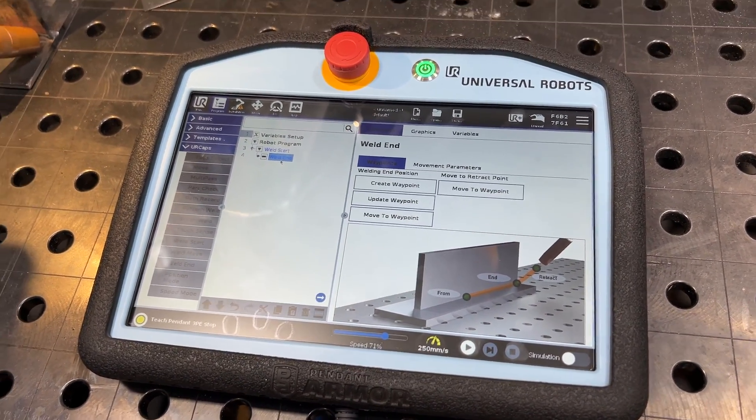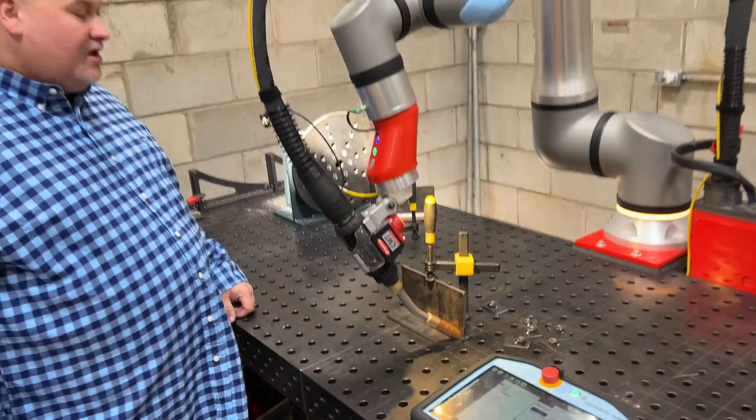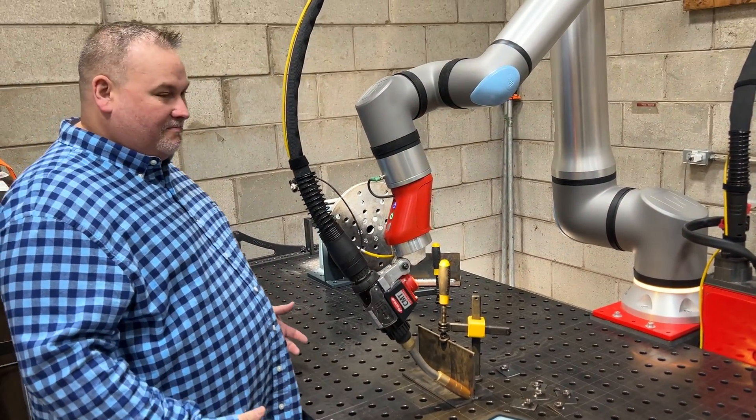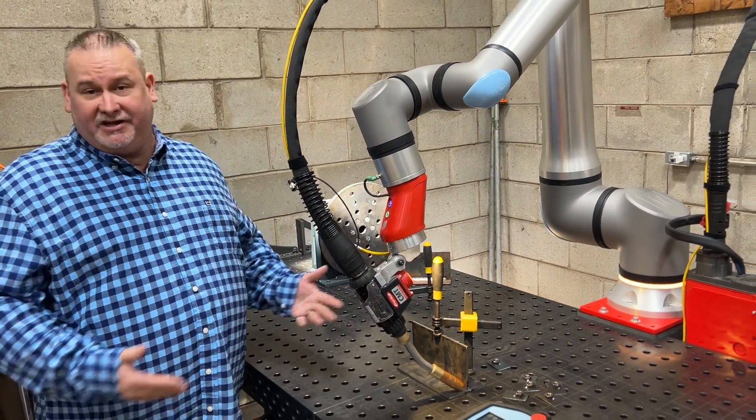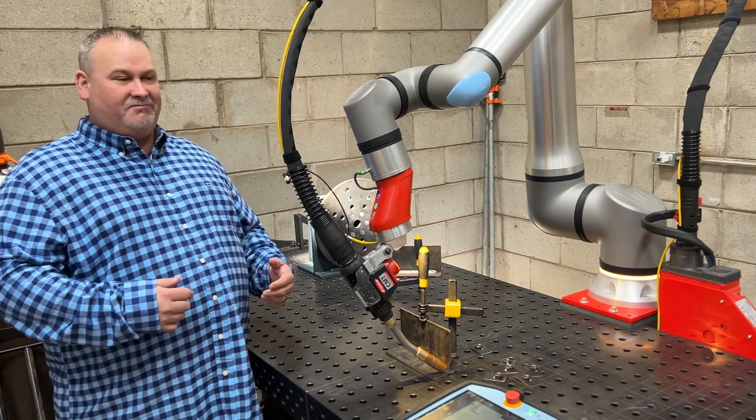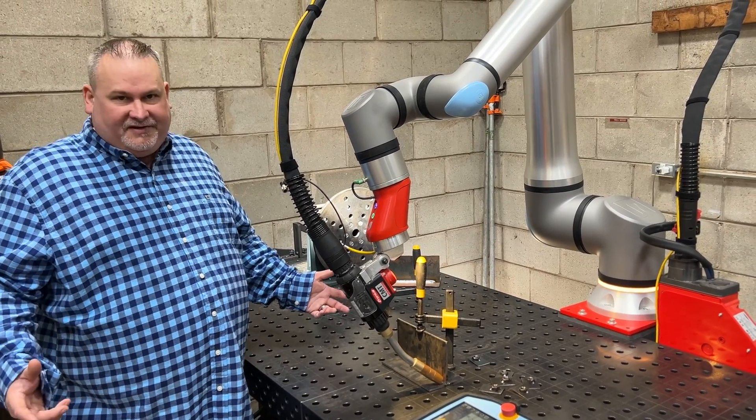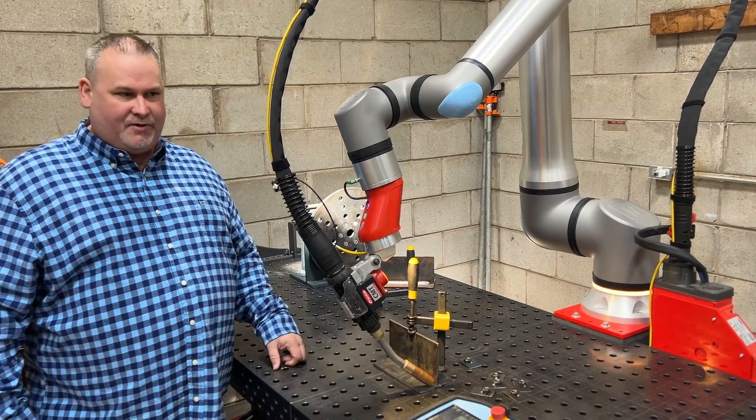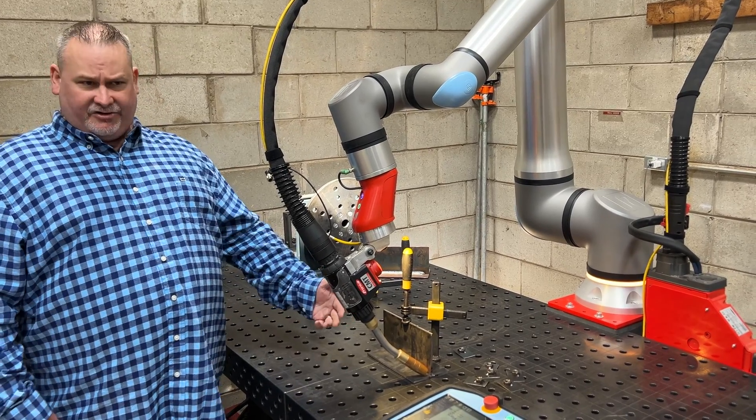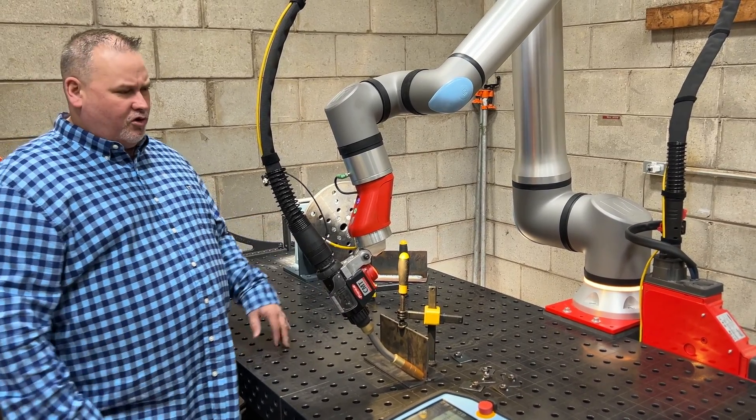The screen shows us that we've got both of those points and I'm done. Now I'm ready to weld. So it took me a lot longer to explain it than it did to do it, but in a simple 10-15 seconds I was able to program this part, much faster than a human. And then we'll go ahead and run this part and show you the quality is going to be much higher than a person can achieve by hand.